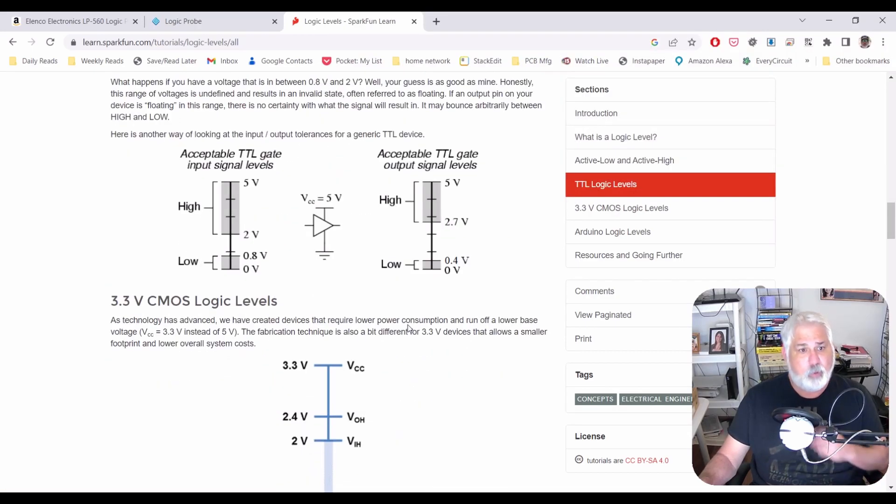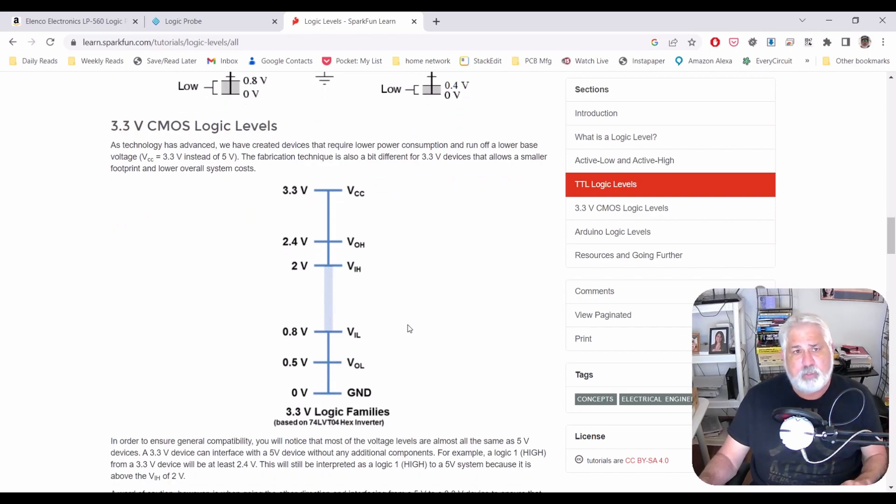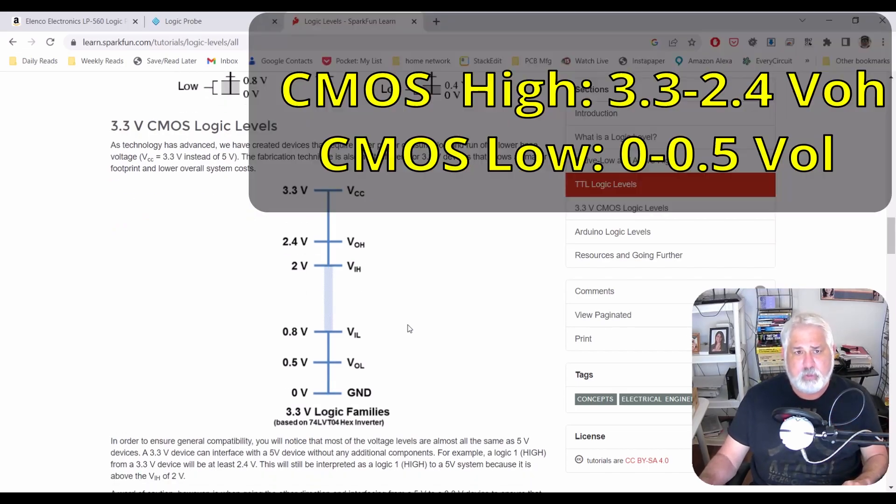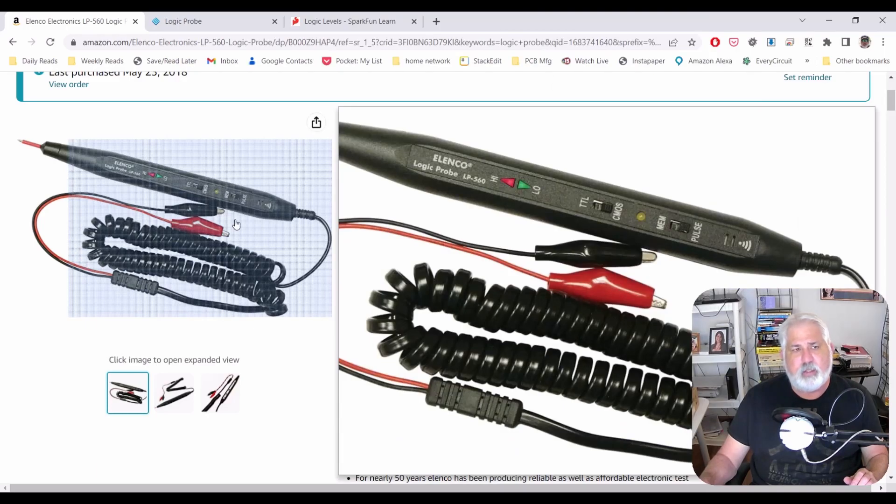Now CMOS is different. Typically CMOS uses lower voltages. So you're telling the Logic Probe now that maybe between 3.3 and 2 volts is a high. And it looks like it's about the same voltage for the low. So that's what that switch actually does. It identifies the voltage level of the circuit you're using.